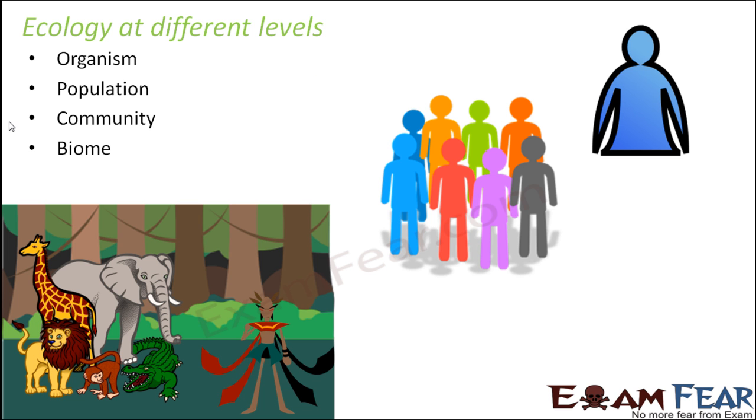It can also exist at population level. Population is a group of individuals together. When there is just one person, he is an organism. When it is a group of say 1000 people, that's a population. At the population level also, this interdependence exists. For example, the entire population of lions are dependent on the entire population of deer. That's ecology at a population level.